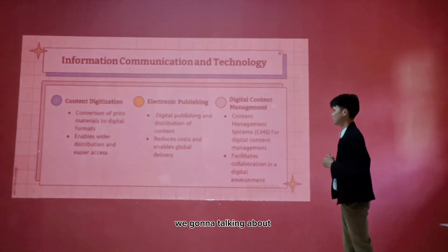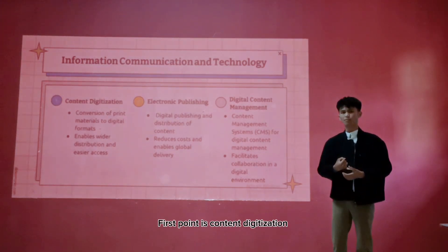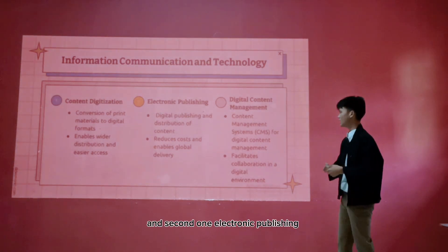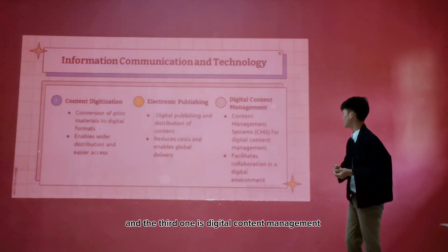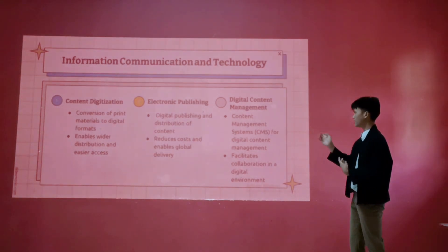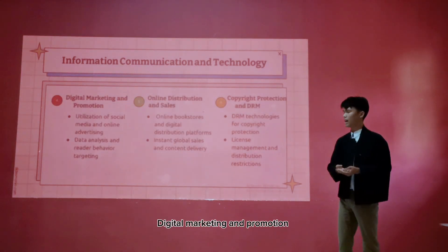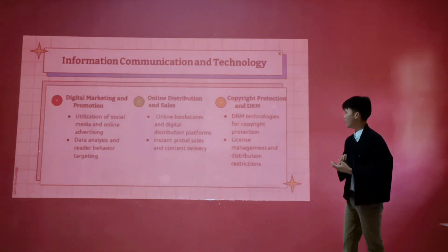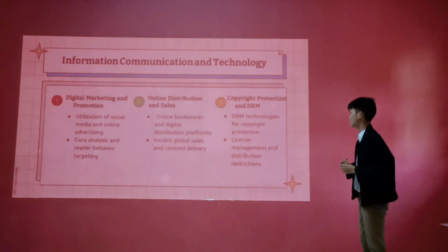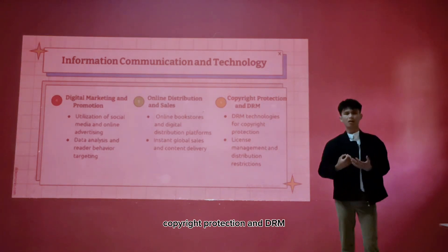We are going to talk about: first, information, communication, and technology in content distribution; second, electronic replacing; third, digital content management; fourth, digital computing and function; fifth, online distribution and sales; and sixth, copyright protection and DRM.